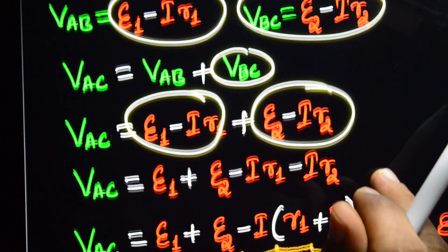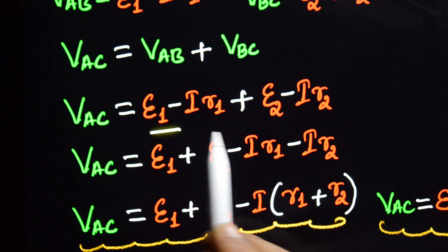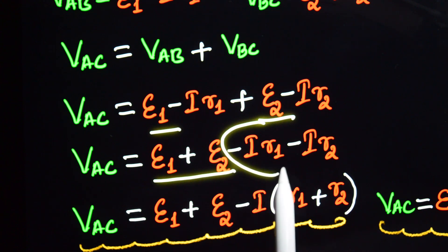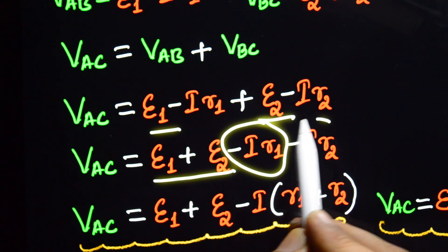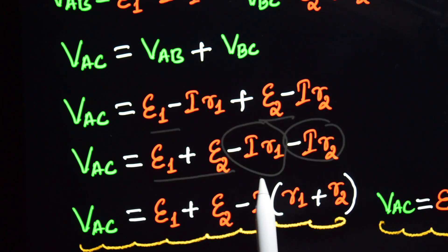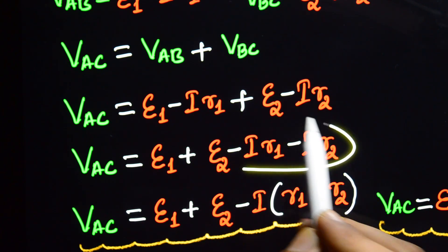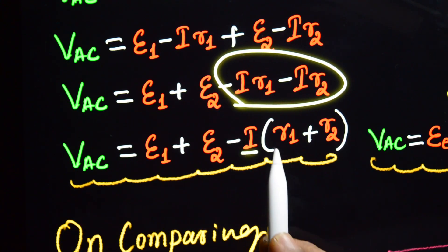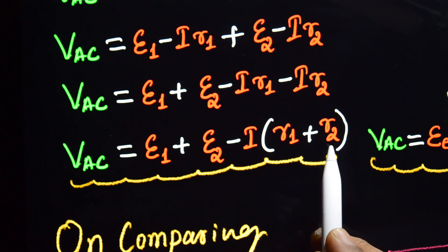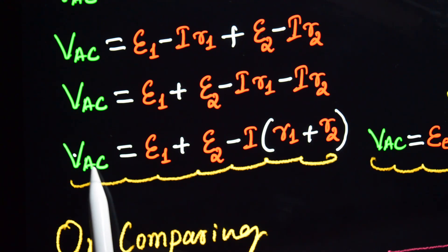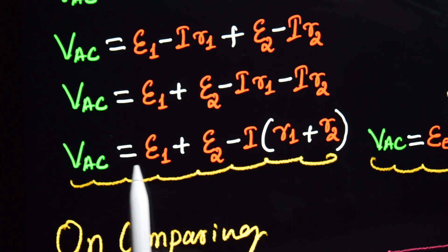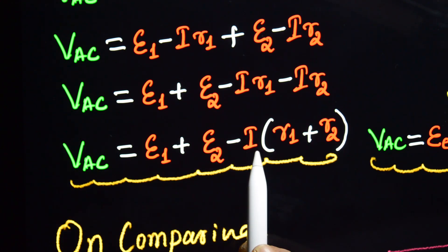Now we can write: VAC equals E1 plus E2 minus I into R1, minus I into R2. We can factor out the current: VAC equals E1 plus E2 minus I into bracket R1 plus R2. So the potential difference across the combination equals E1 plus E2 minus I into (R1 plus R2).